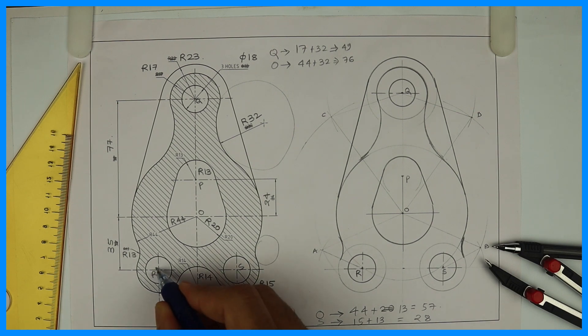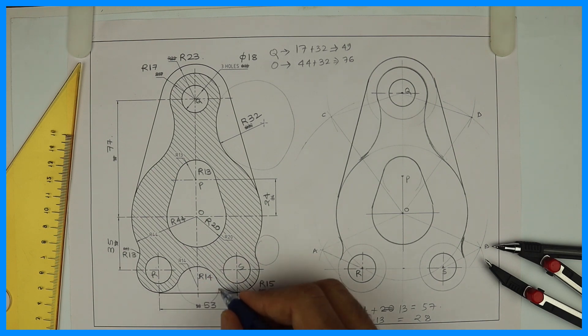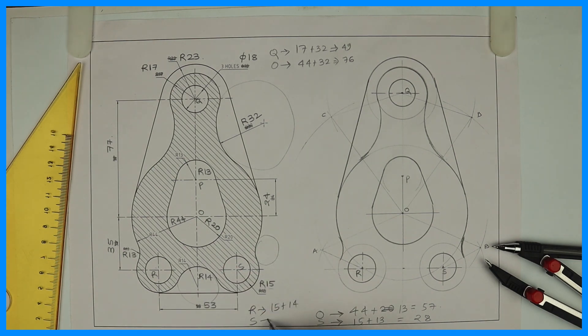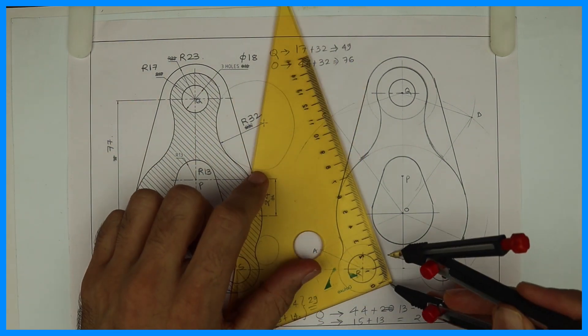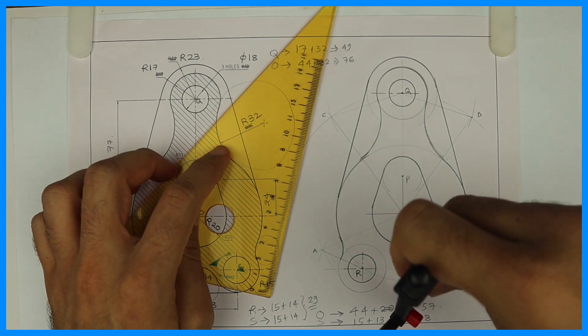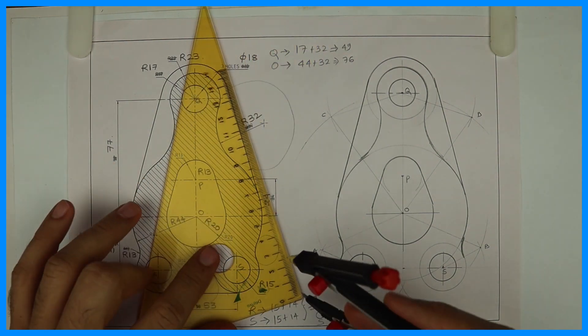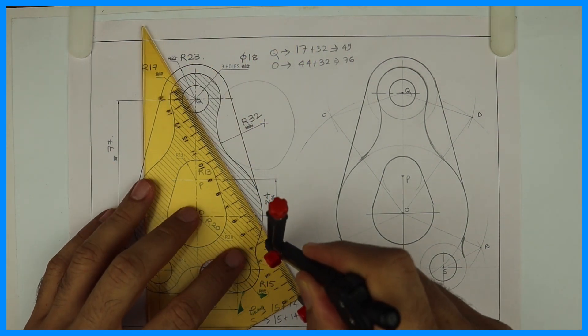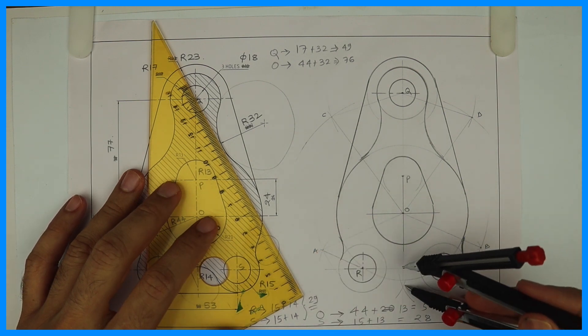So from R we'll cut 15 plus 14, and from S also 15 plus 14, so that would be 29. Take 29 in your compass and from R you cut 29 and from S you cut 29. Wherever they intersect, from that point you can take radius 14.